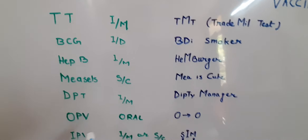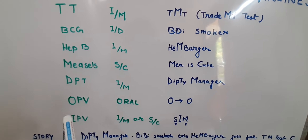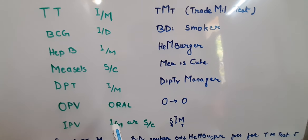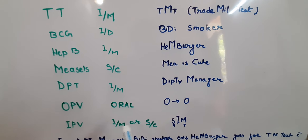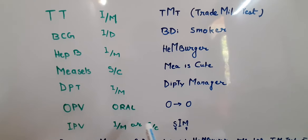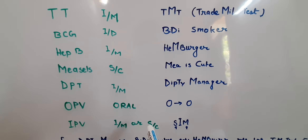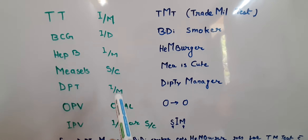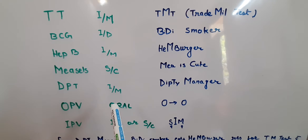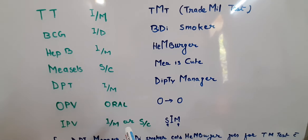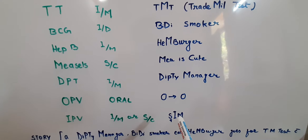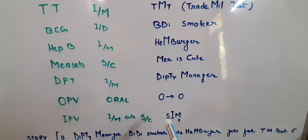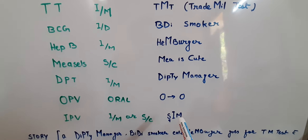Mia represents the Measles vaccine given subcutaneously. OPV: O for oral and O for OPV — easy to remember. For IPV, the killed polio vaccine given intramuscular or subcutaneous, remember 'SIM' — I for IPV, S for subcutaneous, and M for muscular — like a SIM card used in mobile.